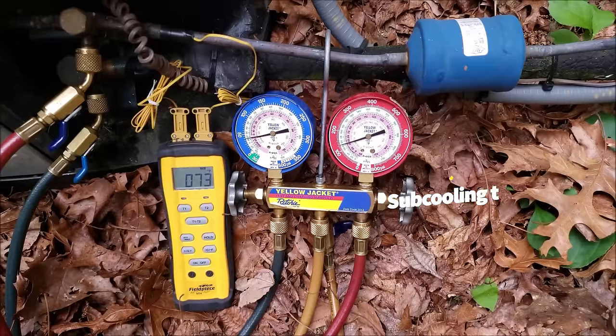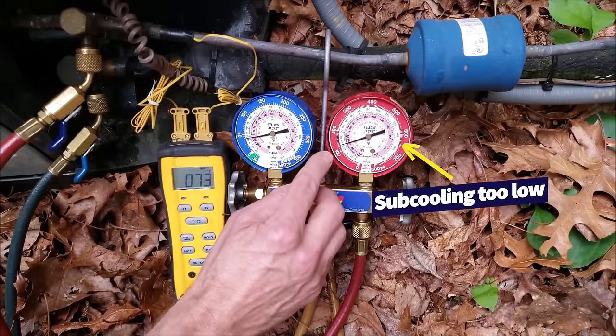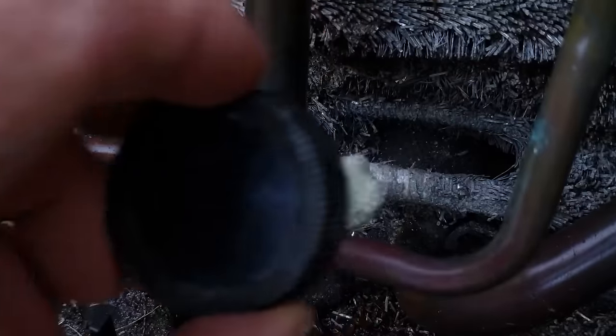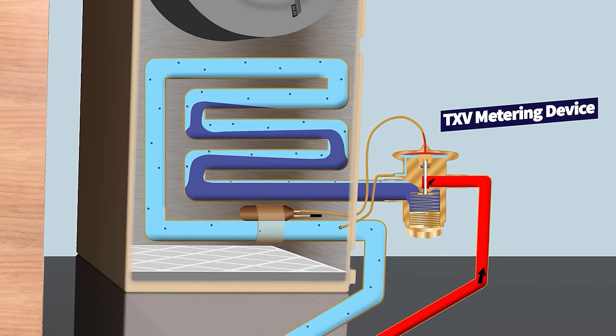If you are low on refrigerant, that means you have a leak on your air conditioning system which may have occurred at a joint or some corrosion point, and that leak is going to need to be addressed. But you can't just assume that you're low on refrigerant, because you could also have a problem with the restriction device restricting the refrigerant charge too much because it's broken.